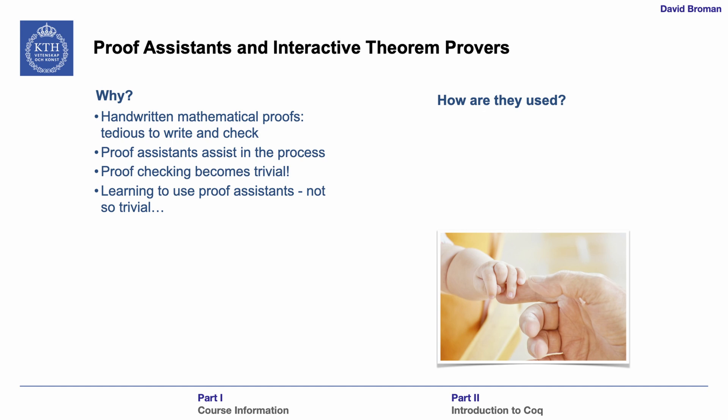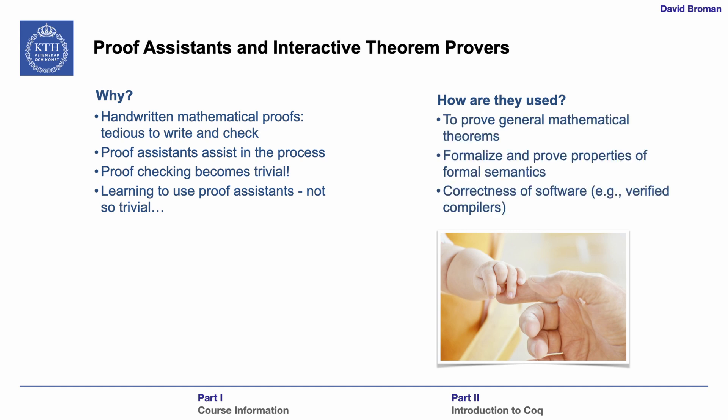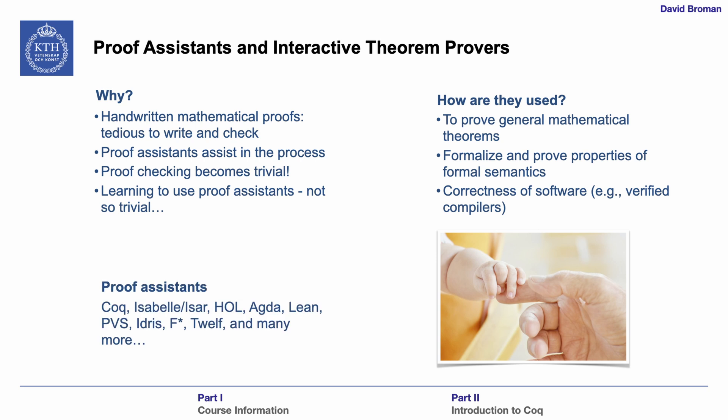Proof assistants can be used in many ways: to prove general mathematical theorems, to formalize and prove semantics of programming languages, and to prove that software itself is correct — for example, verified compilers like CakeML or CompCert. There are many different kinds of proof assistants, just to mention a few: Coq, Isabelle, HOL, Agda, Lean, and so forth. We will focus on Coq in this course.